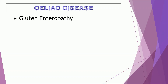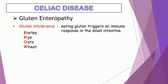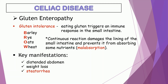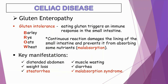Celiac disease, also called gluten enteropathy, is an immune reaction when a patient eats foods that contain gluten, a protein found in barley, rye, oats, and wheat. Eating gluten triggers an immune response in the small intestine. Continuous reaction damages the lining of the small intestine and prevents it from absorbing some nutrients. Key manifestations are distended abdomen, weight loss, steatorrhea, muscle wasting, diarrhea, and malabsorption syndrome. Management: the only way to prevent the symptoms is to follow a gluten-free diet, which lets the intestine heal and stops further inflammation and complications.